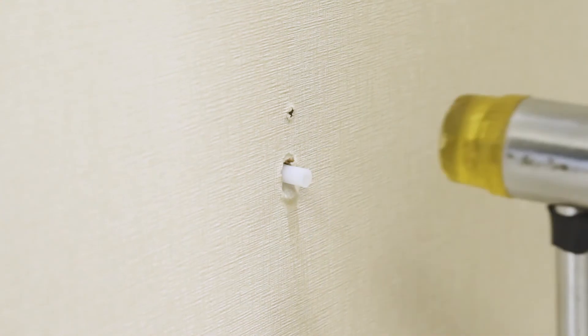Insert the wall anchors into the holes. Tap gently on the ends with a hammer until the wall anchors are flush with the wall.